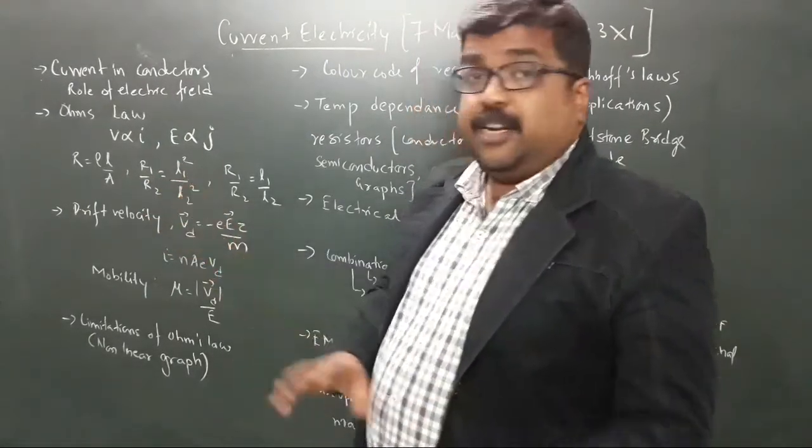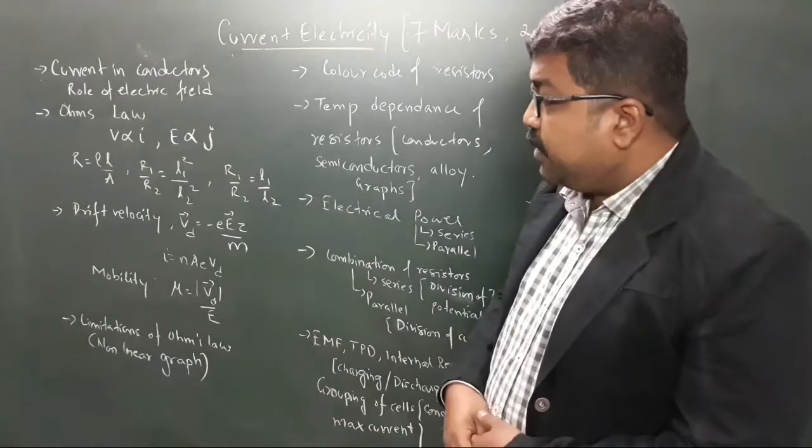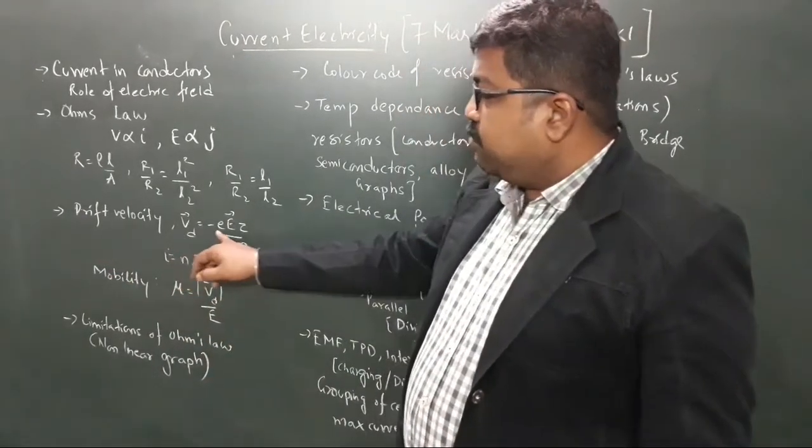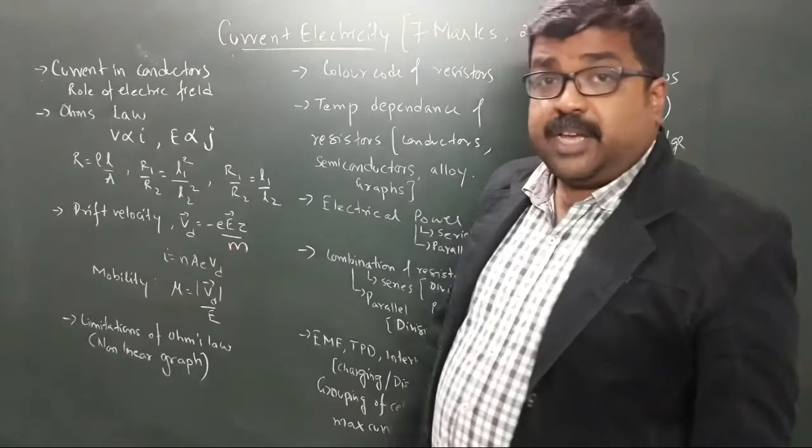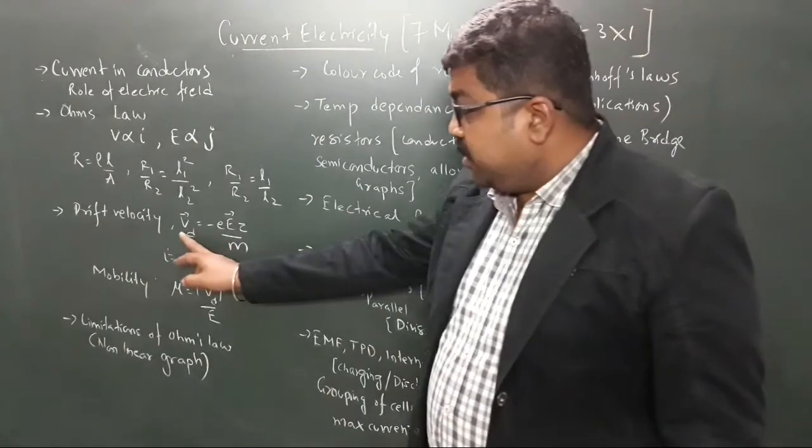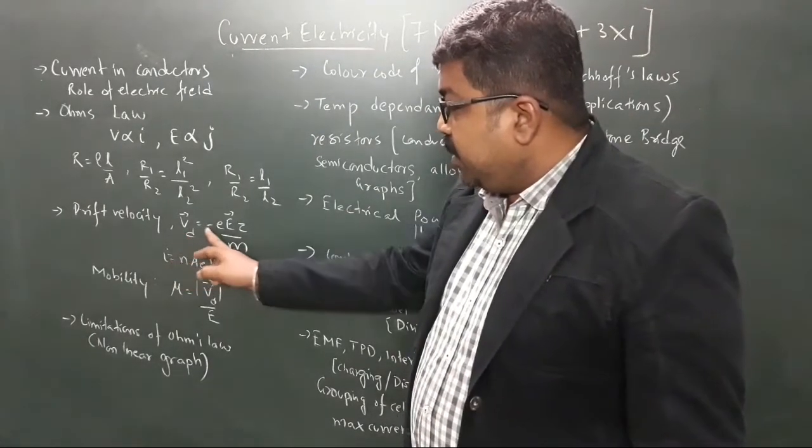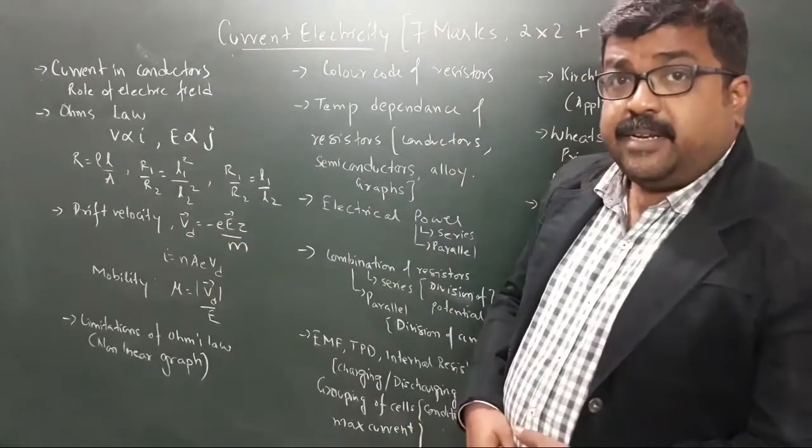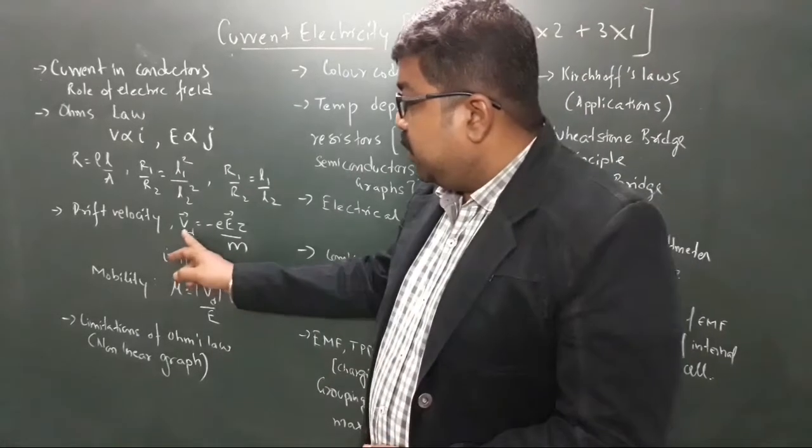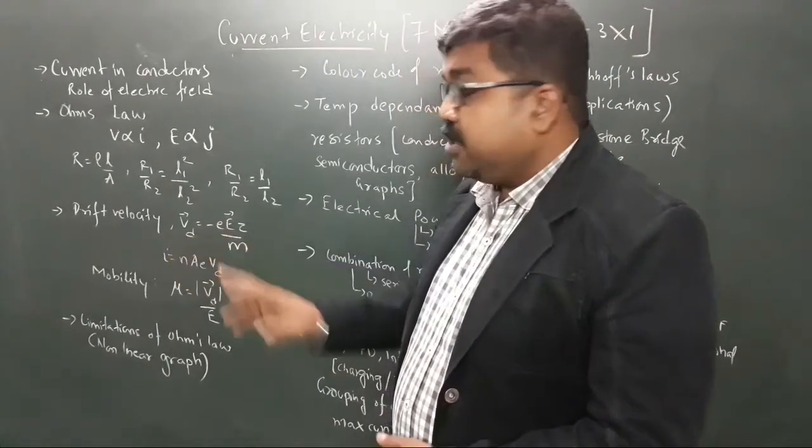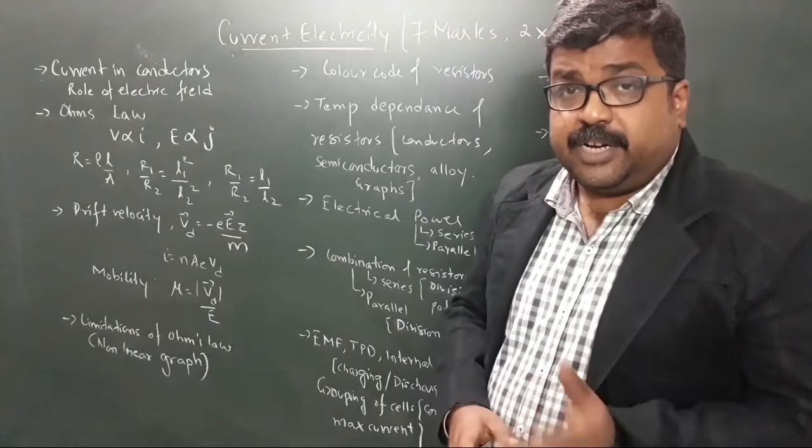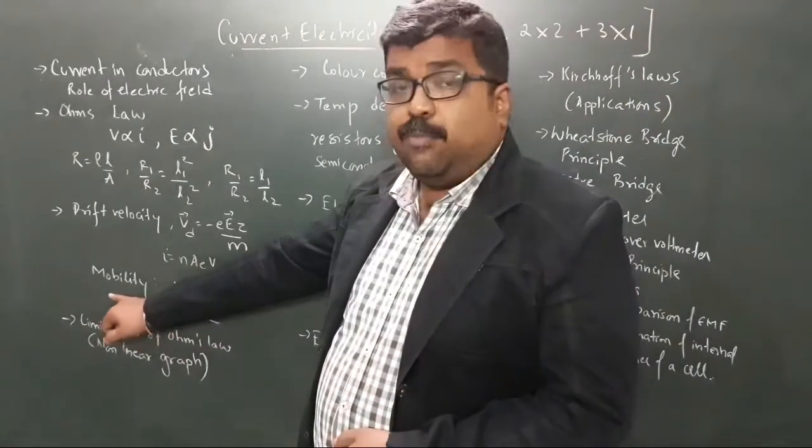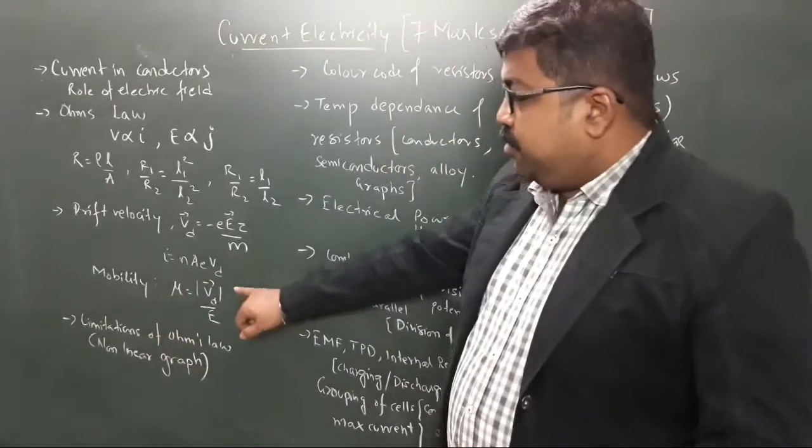Then you have drift velocity. The drift velocity expression is VD equals minus e E tau by M. As you can see, VD is a vector quantity, electric field is a vector quantity, and you have a minus sign. The minus sign denotes that the drift velocity of electrons is opposite to the direction of electric field. Electrons are negatively charged, so they drift opposite to the electric field direction. Then you have mobility, which is the ratio of magnitude of drift velocity per unit electric field.